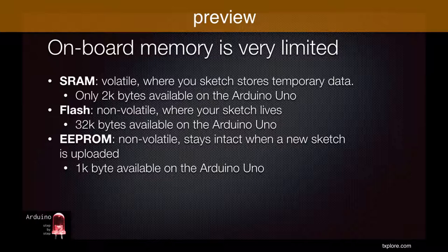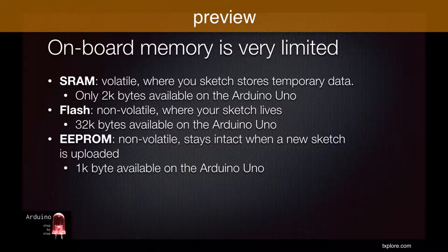Static RAM, or static random access memory, is volatile and is where your sketches store values that belong to variables, such as sensor readings. Volatile memory is cheap and fast, but as soon as power is lost it is erased. Therefore, it's only used as a temporary place to store data.